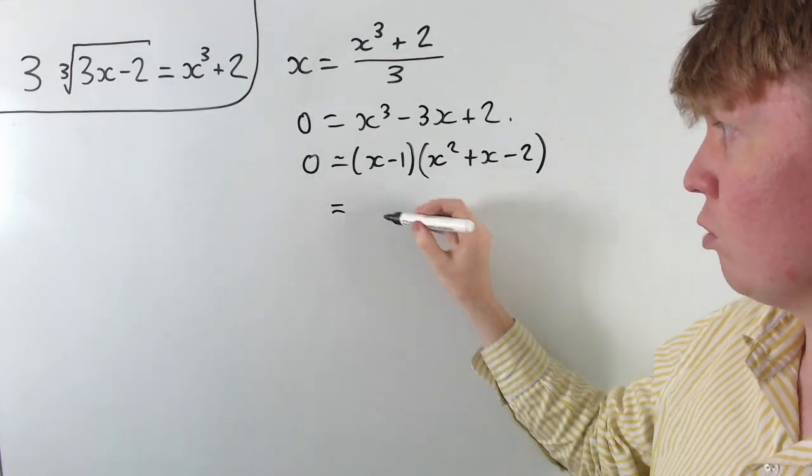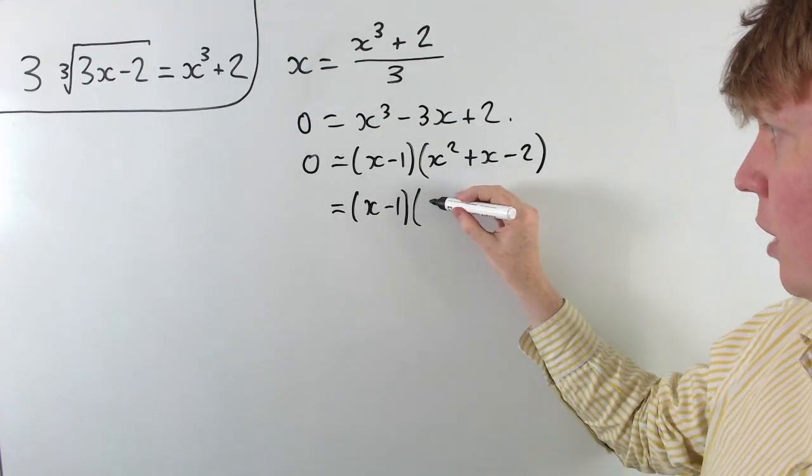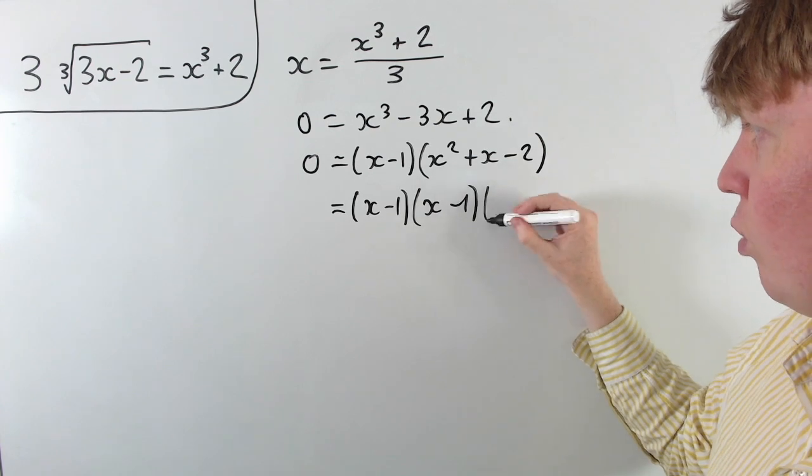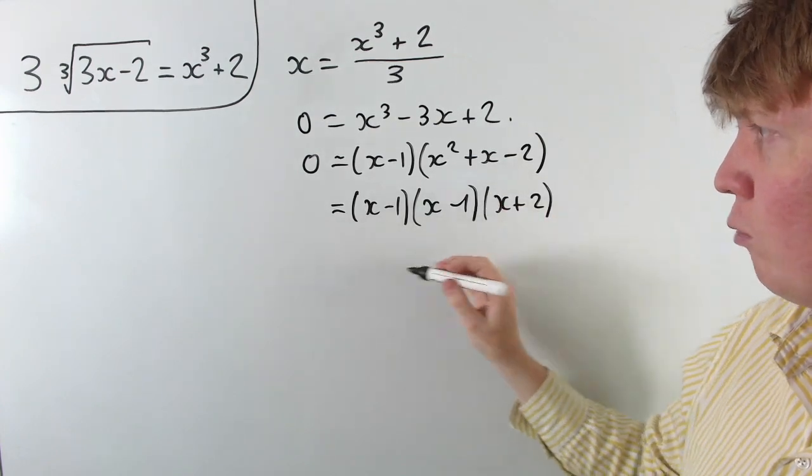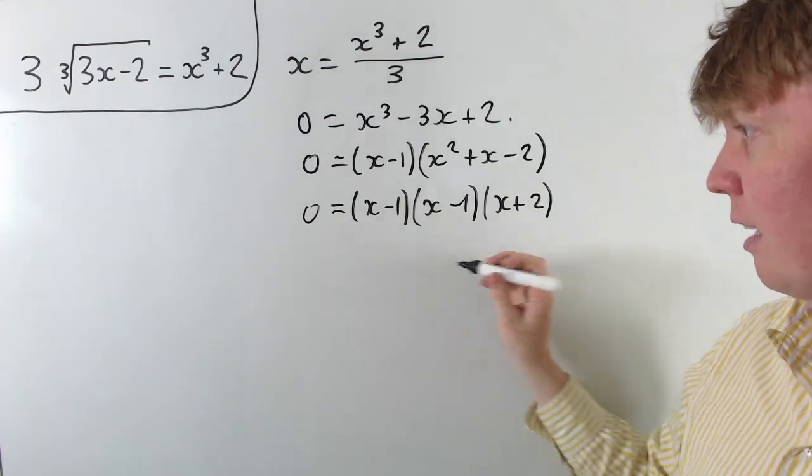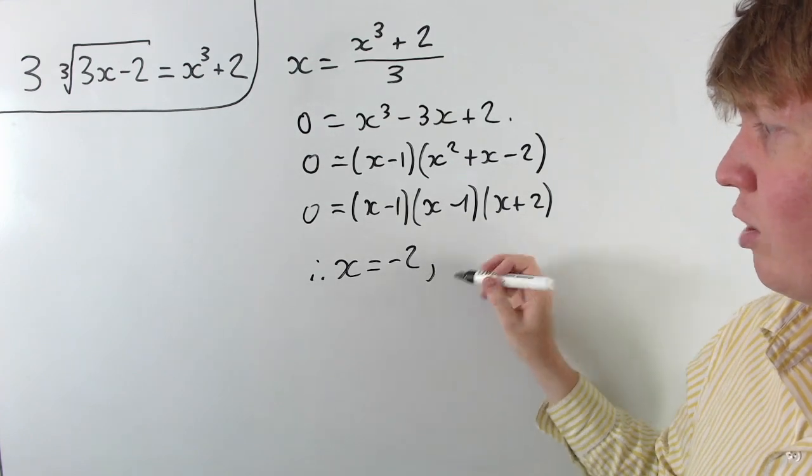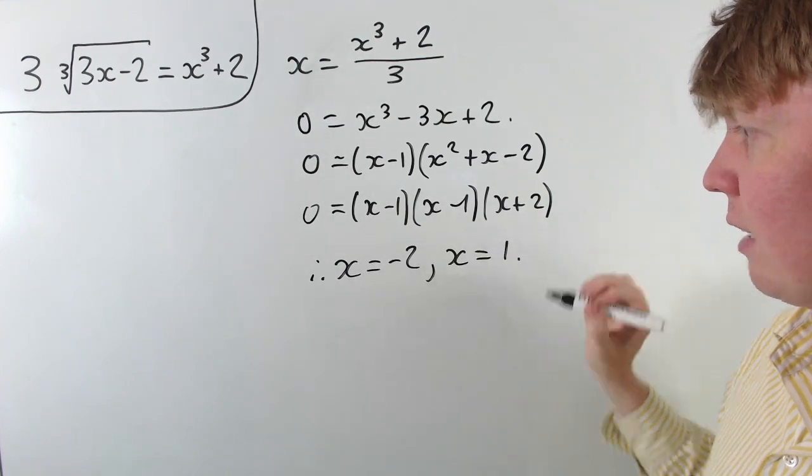Then we can even factorize this quadratic as well, so we get x minus 1 multiplied by here, this factors as x minus 1 and x plus 2, so we actually get a repeated root then, x is 1, and our other solution is x is negative 2. So we've got two solutions to our original equation, x is negative 2 and x is positive 1.